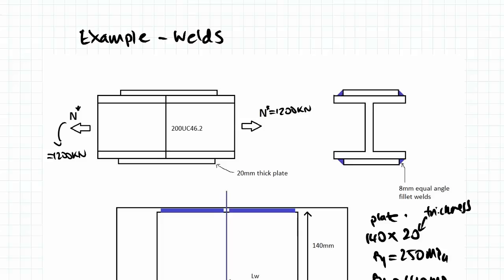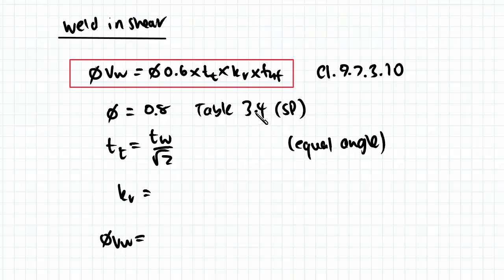If I didn't state it before, this is an SP weld. We're going to be using an SP weld. You can look at Table 3.4 and find that it's 0.8, or you can refer to clause 9.7.3.10, which is where this is from.